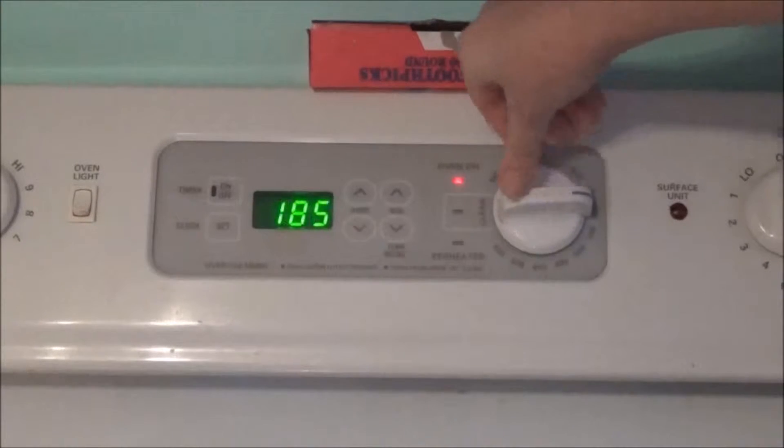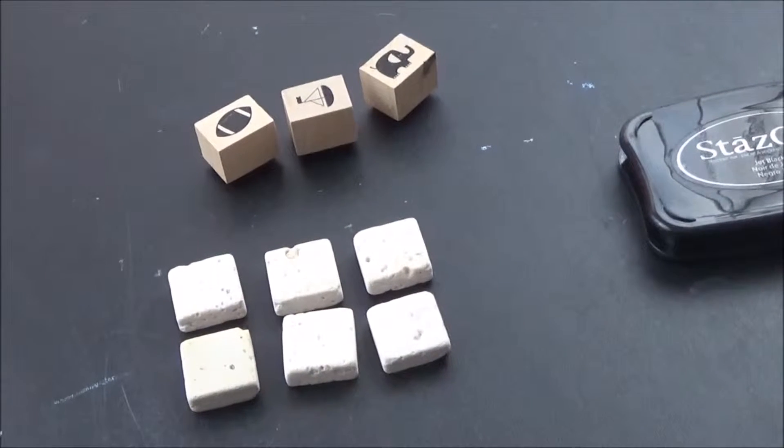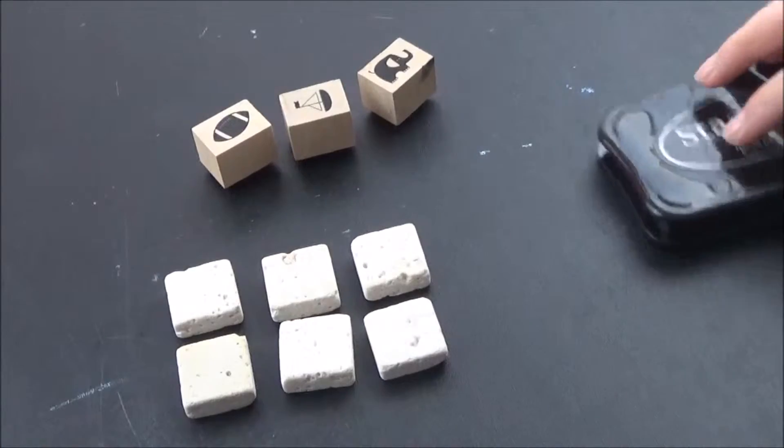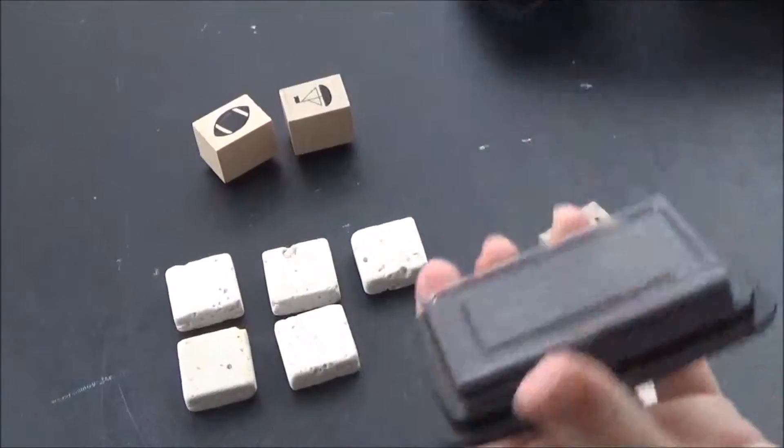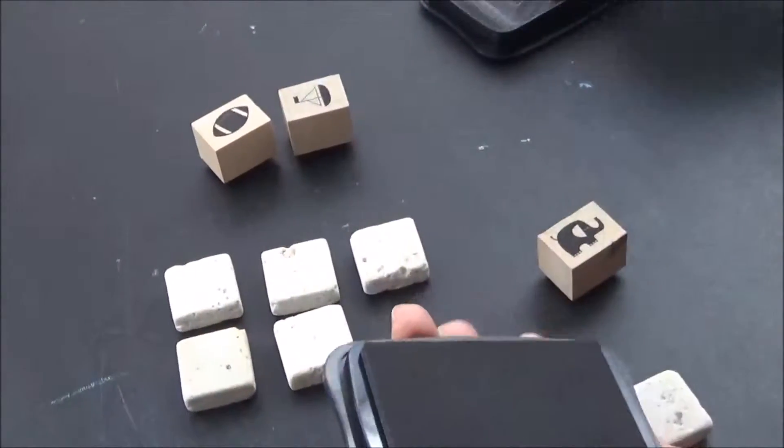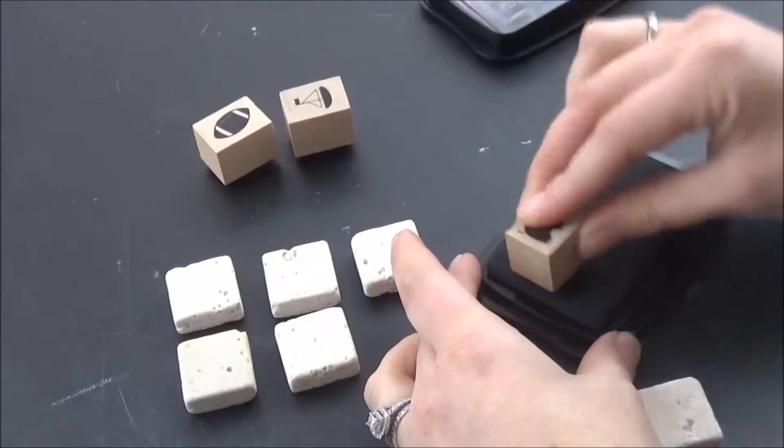To start off, you want to preheat your oven to 250. You will need some little tiles - these are one by one stones. You can get a sheet of these at Lowe's; they come 144 on a sheet. Then I'm going to take my little stamp pad from Michaels.